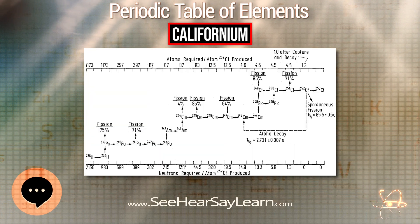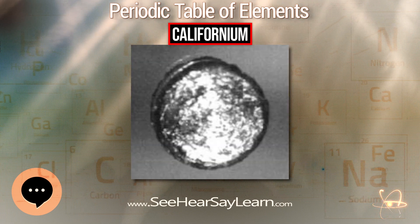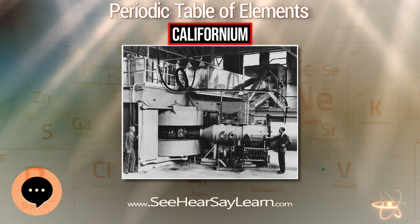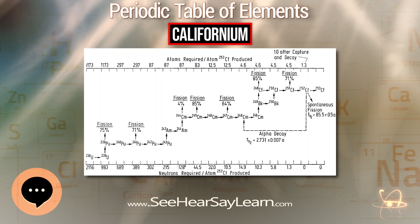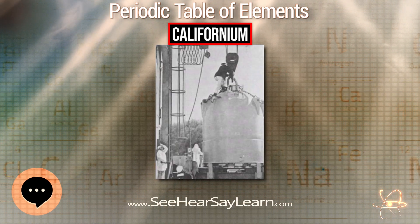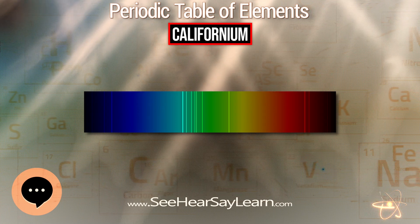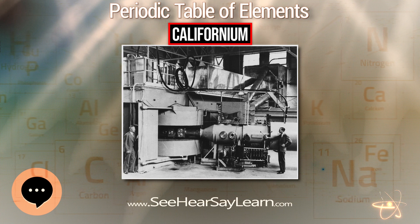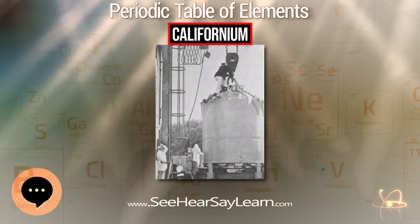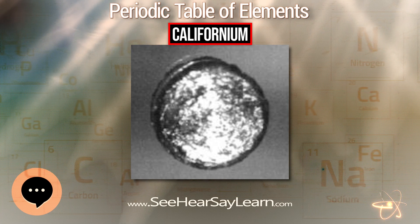The transuranic elements from americium to fermium, including californium, occurred naturally in the natural nuclear fission reactor at Oklo, but no longer do so. Californium is produced in nuclear reactors and particle accelerators. Californium-250 is made by bombarding berkelium-249 with neutrons, forming berkelium-250 via neutron capture, which quickly beta decays to californium-250. Bombardment of californium-250 with neutrons produces californium-251 and californium-252. As of 2006, curium isotopes 244 to 248 are irradiated by neutrons to produce primarily californium-252.